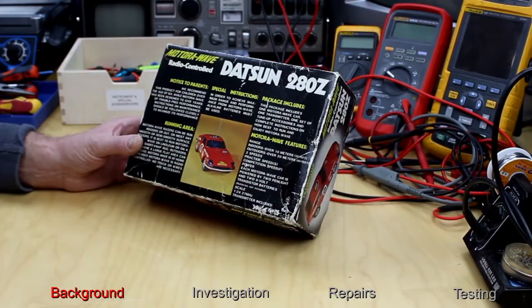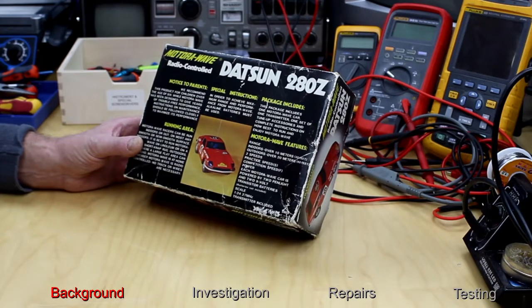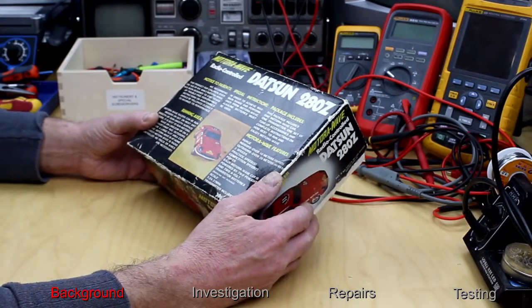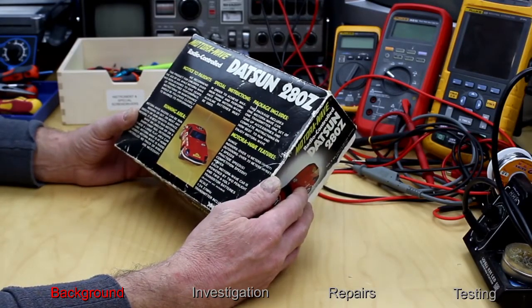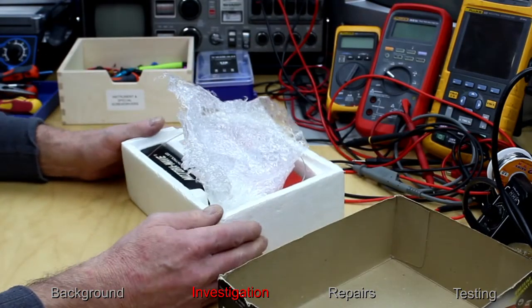Welcome back to the Retro Tech Repair Shop. Today I have a Datsun 280Z radio remote control car, purchased off of eBay. Apparently the car works but the radio transmitter doesn't. Let's have a look what's inside the box.